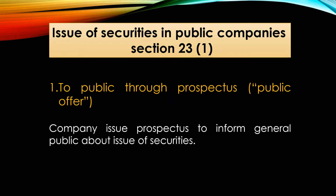Means, कितने shares issue हो रहे हैं, किस price पर issue होंगे, company के क्या-क्या future plans हैं, क्या-क्या investment किया हुआ है, या कहाँ investment करना चाहती है, कौन-कौन directors हैं, कौन management है. उसी तरह prospectus में सब कुछ mention किया जाता है, और prospectus इसलिए issue किया जाता है ताकि general public को ये पता लग सके कि ये company अपने securities को issue करने वाली है. और ये सभी information prospectus में इसलिए mention होती है ताकि जो investors हों वो एक decision ले पाएं कि उनको इस company में invest करना है या नहीं.